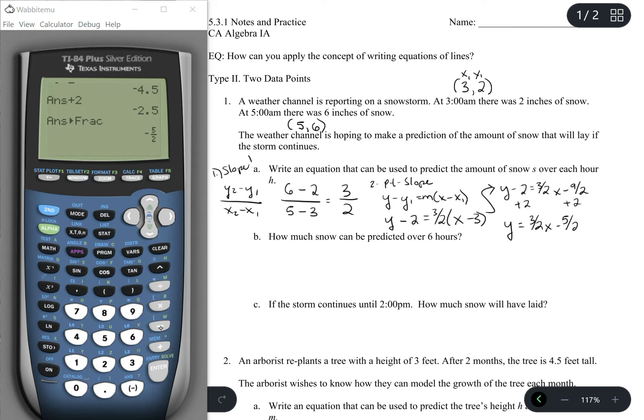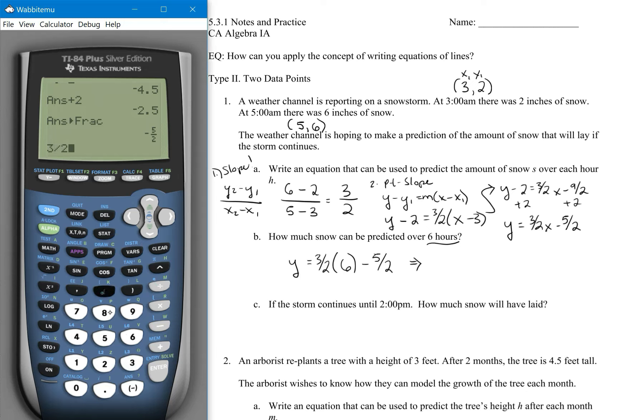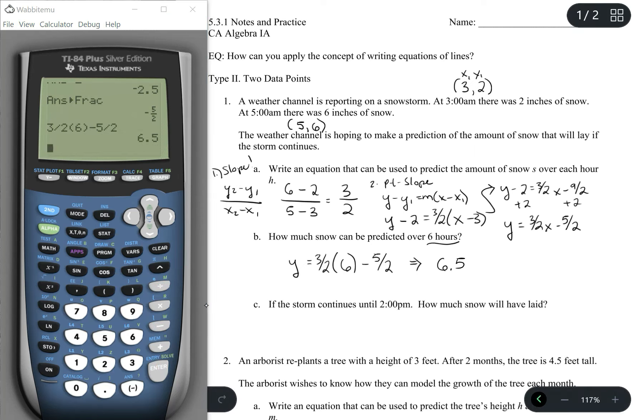Now, y is actually our inches of snow, and x is the time. So how much snow can be predicted over 6 hours? Basically, we're looking at y is equal to 3 halves times 6 minus 5 halves. Since 6 is our amount of time. Typing that in, 3 halves times 6 minus 5 halves, means we're looking at about 6.5 inches.